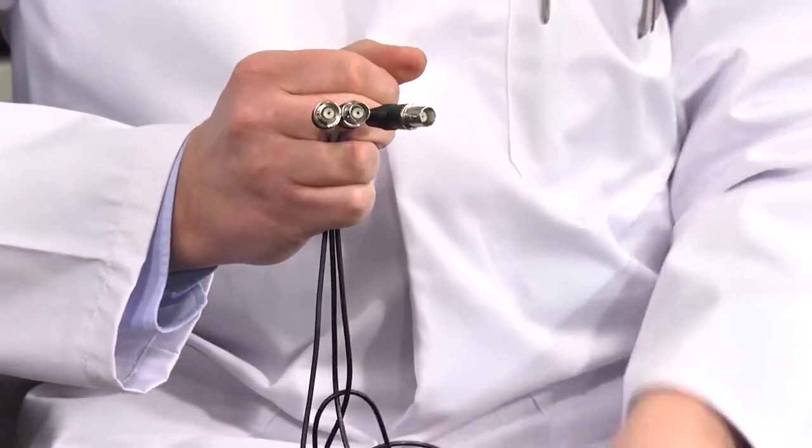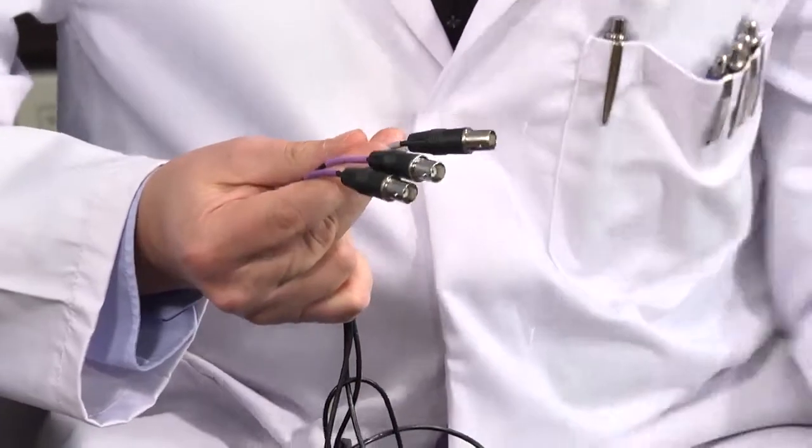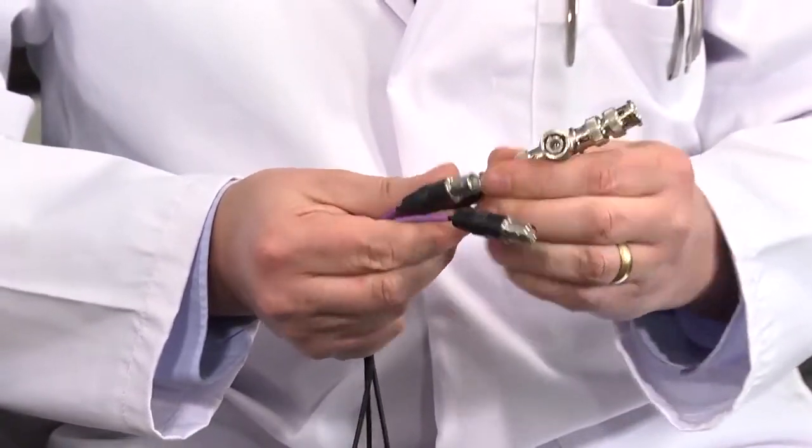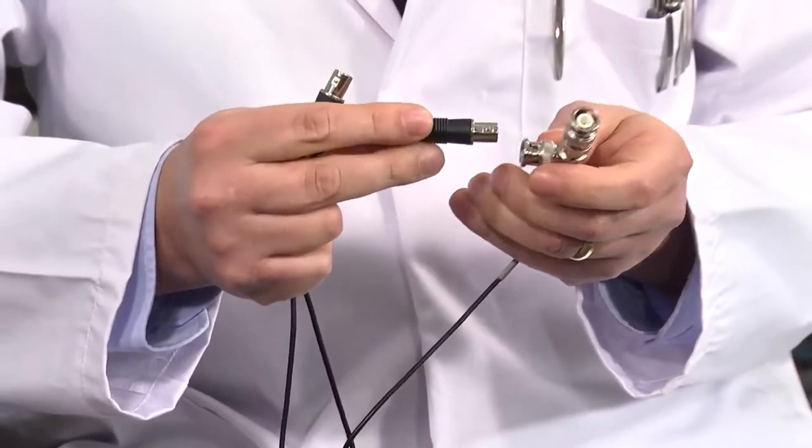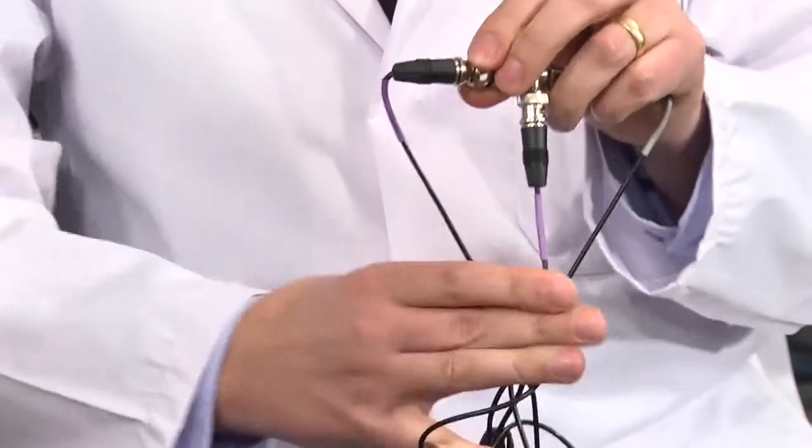Now I'm going to connect the sync system together. I have the sync output from camera one which we're using as our master. I'll connect it to my chain of connectors and then it's the sync inputs to camera two and camera three connected together.